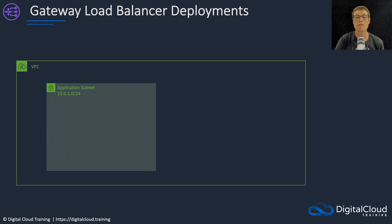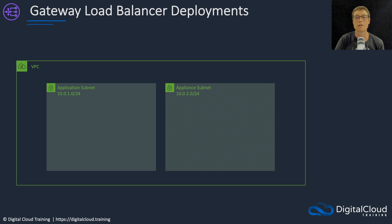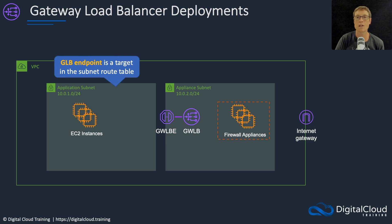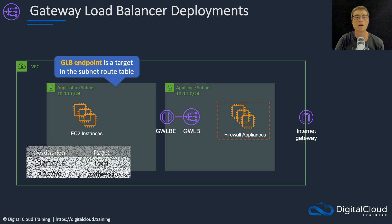In this case, we have a VPC and an application subnet — this is where all of our applications are running. We then have an appliance subnet, a separate subnet that's dedicated for our appliances. We've got our applications running in the app subnet, and then we've got the firewall appliances running in the appliance subnet. We then deploy a gateway load balancer and a gateway load balancer endpoint. We have an internet gateway attached to the VPC. The GLB endpoint is a target in the subnet route table.